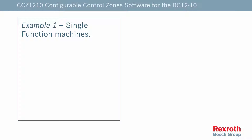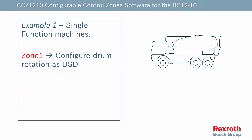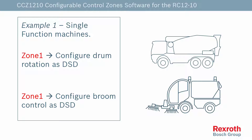In our first example, we show a couple of typical applications for a single-function machine. The first is a concrete mixer — we've set up zone 1 as a DSD to control the drum rotation. The second is a street sweeper, where we set up zone 1 as a DSD to control the broom.